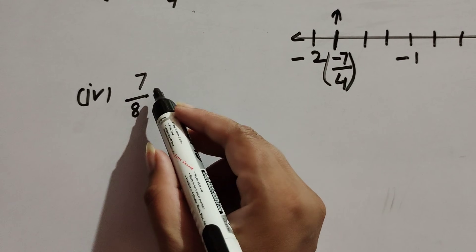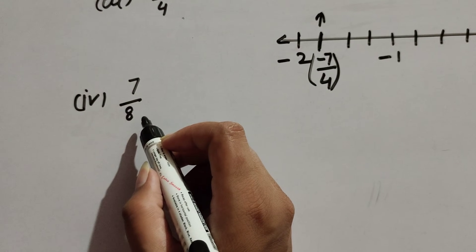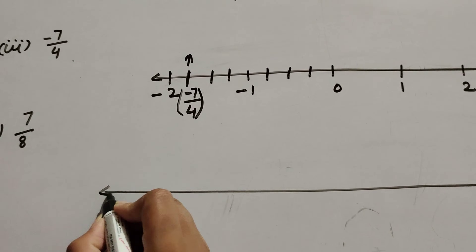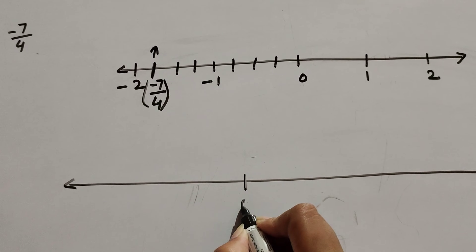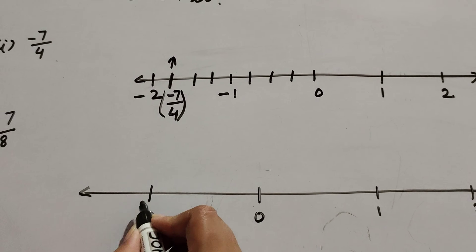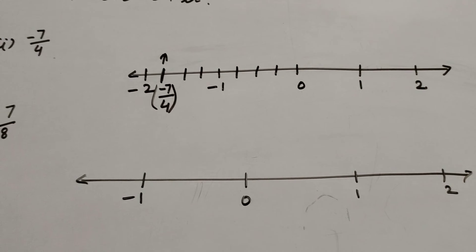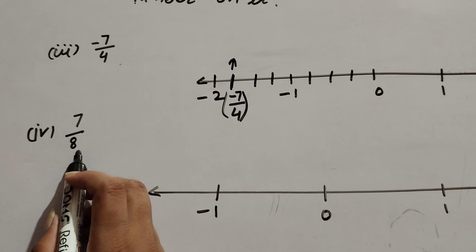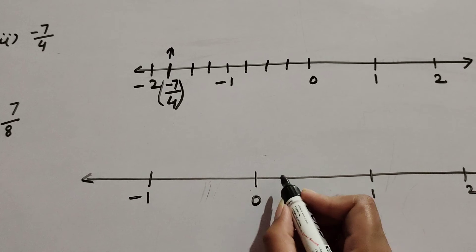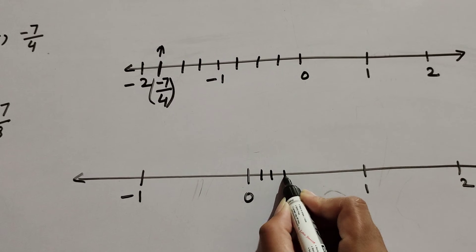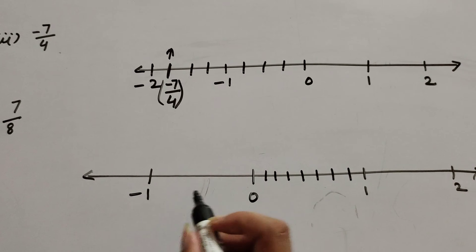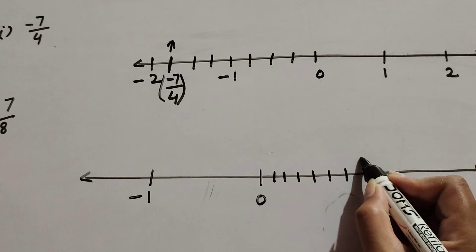Question number four: seven over eight. It is a positive rational number, so first we draw a number line divided into equal parts, with zero, one, two. Positive numbers are on the right hand side and negative numbers on the left hand side. We have the number seven over eight, so we divide the section zero to one into eight equal parts: one, two, three, four, five, six, seven, and eight.